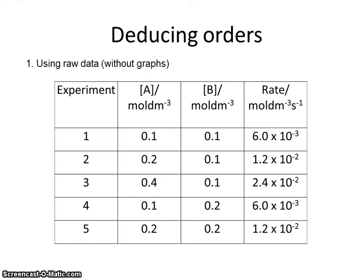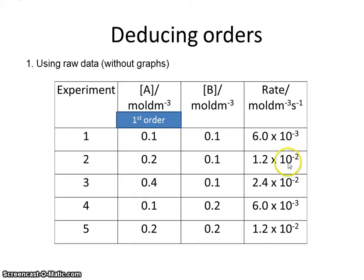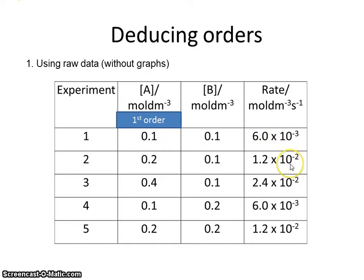The order with respect to A is one — first order. Looking at experiments one, two, and three, the concentration of B remains constant, but we first double the concentration of A. Despite some slightly awkward powers of ten, the rate also doubles. We then double the concentration of A again between experiments two and three, and the rate doubles again. As you double concentration and rate doubles, that's a proportional relationship suggesting first order.